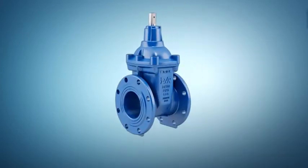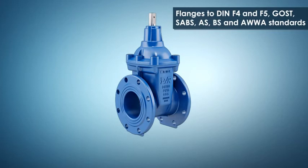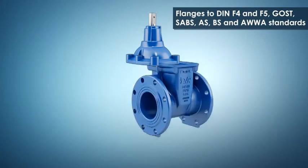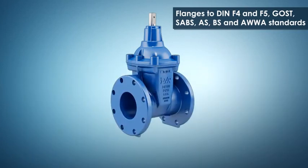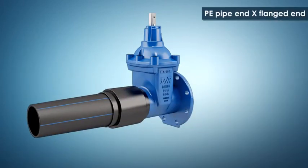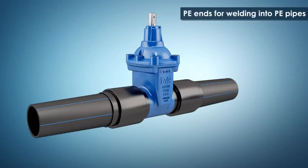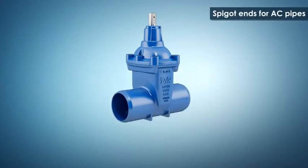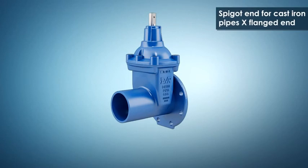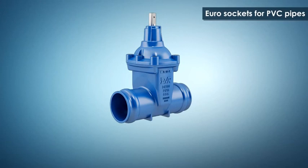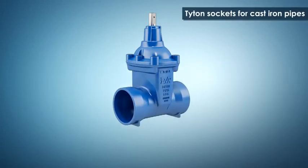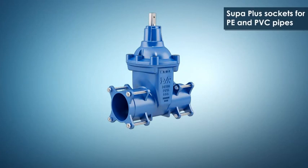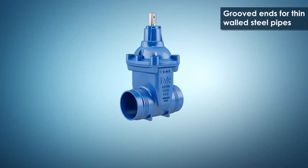AVK offers a wealth of valve end configurations. Flanges to DIN F4 and F5 and to GOST, SABS, AS, BS, and AWWA standards. One PE pipe end, one flanged end. PE ends for welding into PE pipes. Spigot ends for cast iron pipes. Spigot ends for AC pipes. One spigot end for cast iron pipes, one flanged end. Euro sockets for PVC pipes. Titan sockets for cast iron pipes. BLS socket and spigot end for cast iron pipes. Super plus sockets for PE and PVC pipes. Victalic grooved ends for thin walled steel pipes.